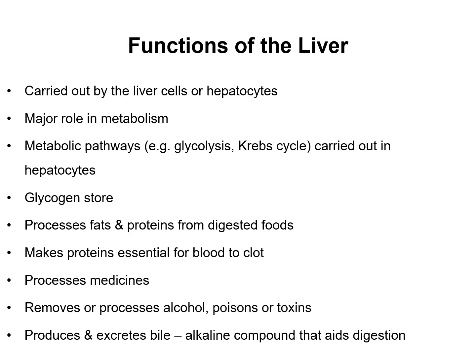Functions of the liver are carried out by liver cells, also known as hepatocytes. These play a major role in metabolism and metabolic pathways such as glycolysis and the Krebs cycle, resulting in the production of ATP. The liver stores glycogen, processes fats and proteins from digested foods, makes proteins essential for blood clotting, processes medicines such as paracetamol, removes alcohol, poisons and toxins, and produces and excretes bile, an alkaline compound which aids digestion.